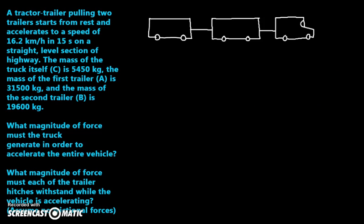The mass of the truck itself - now I've labeled it in the question as T, but I think labeling the truck T is horrible because one of our forces is tension, which we usually label as T. Things are going to get confusing, so I'm going to label the tractor trailer as C instead. C is 5450 kilograms, the first trailer A is 31,500, and the mass of B in the back is 19,600 kilograms. There's my three guys.